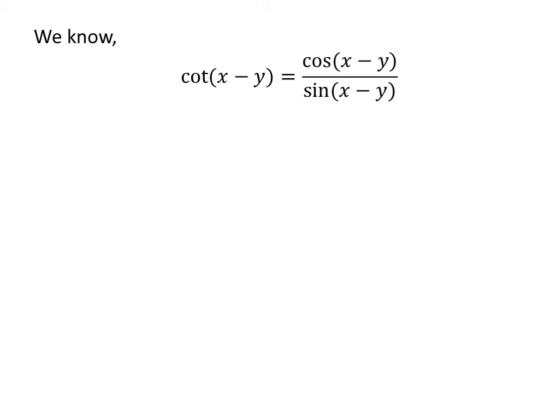We know cotangent of x minus y is equal to cosine of x minus y upon sine of x minus y.